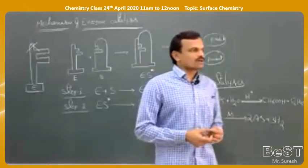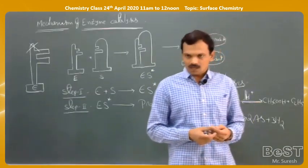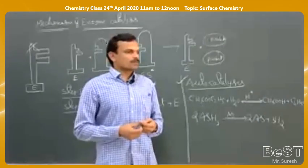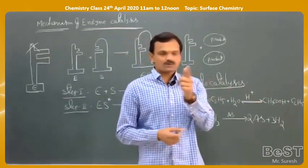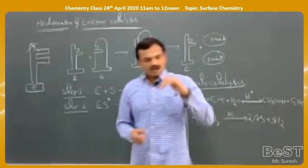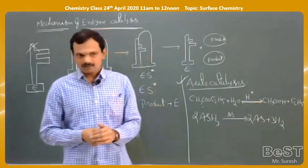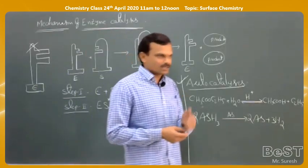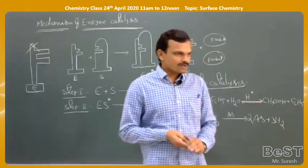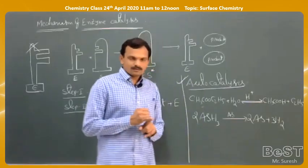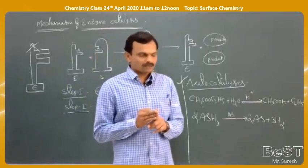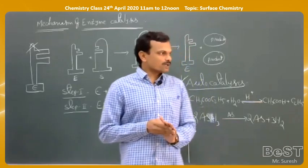Third application: manufacture of nitric acid by the Ostwald process. Ammonia is first oxidized to nitric oxide in the presence of oxygen using a platinum catalyst: 4NH3 + 5O2 → 4NO + 6H2O. Then nitric oxide is oxidized to nitrogen dioxide, which dissolves in water in the presence of oxygen to produce nitric acid. These are the three major commercial applications of catalysis.